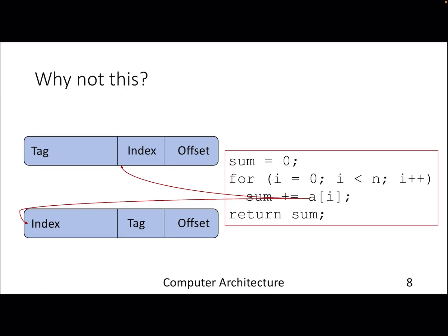As a thought experiment: try to find out why index bits are placed where they are in the address and why not somewhere else. I'm not going to answer it here — think about it. This is an example you may like to go through to see how addresses are eventually mapped into a cache and what the benefit of this particular mapping is.